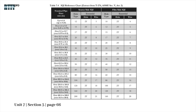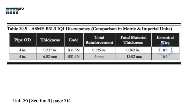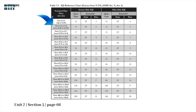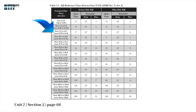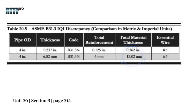Now I'll show from ASME Section 5, Article 2, how we derived these IQIs for 4-inch in metric and millimeters. Number 5 wire is chosen for inches because with a total thickness of 0.362 inch, for materials up to 0.375 inch thick, a Number 5 wire is allowed for film-side exposure. The discrepancy for metric requires a Number 6 wire, because for wall thickness over 9.5 to 12.7 millimeters a Number 6 wire is allowed. For metric, the 4-inch standard wall thickness is 12.02 millimeters, which falls in that range.